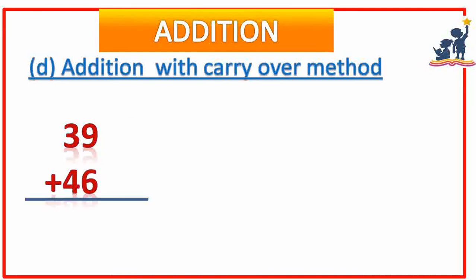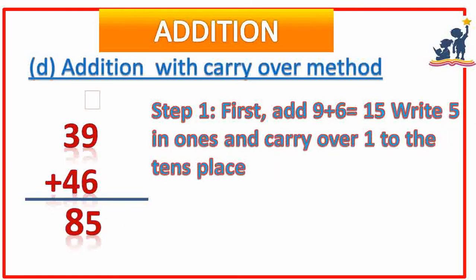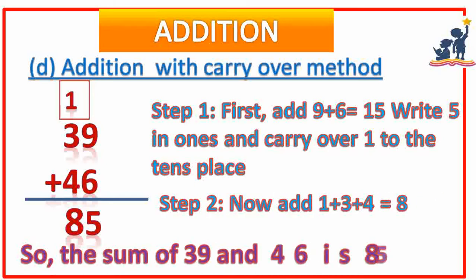D: addition with carry over method. 39 plus 46 is 85. In the first step, add 9 plus 6 is equal to 15. Write 5 in ones and carry over 1 to the tens place. In the second step, now add 1 plus 3 plus 4; the answer becomes 8. So the sum of 39 and 46 is 85.